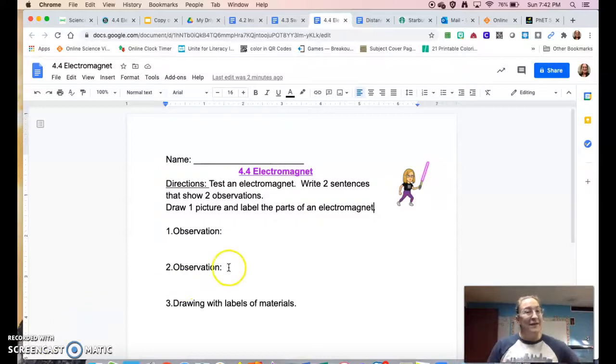This is your worksheet today. The worksheet is not made to be complicated or hard. It is meant to let you write your ideas and I don't just want quick sloppy work. I want evidence of effort, evidence of learning. 4.4 Electromagnet: question one is an observation, two is another observation, and three is a drawing with labels of the materials that are used to make the electromagnet.